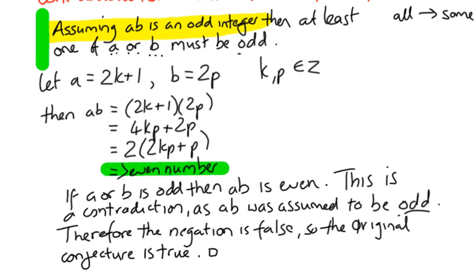We're saying that we would expect the value of AB to be even. However, we've already said that AB is odd. That's a contradiction. Therefore, our negation is false. So the original conjecture must be true.